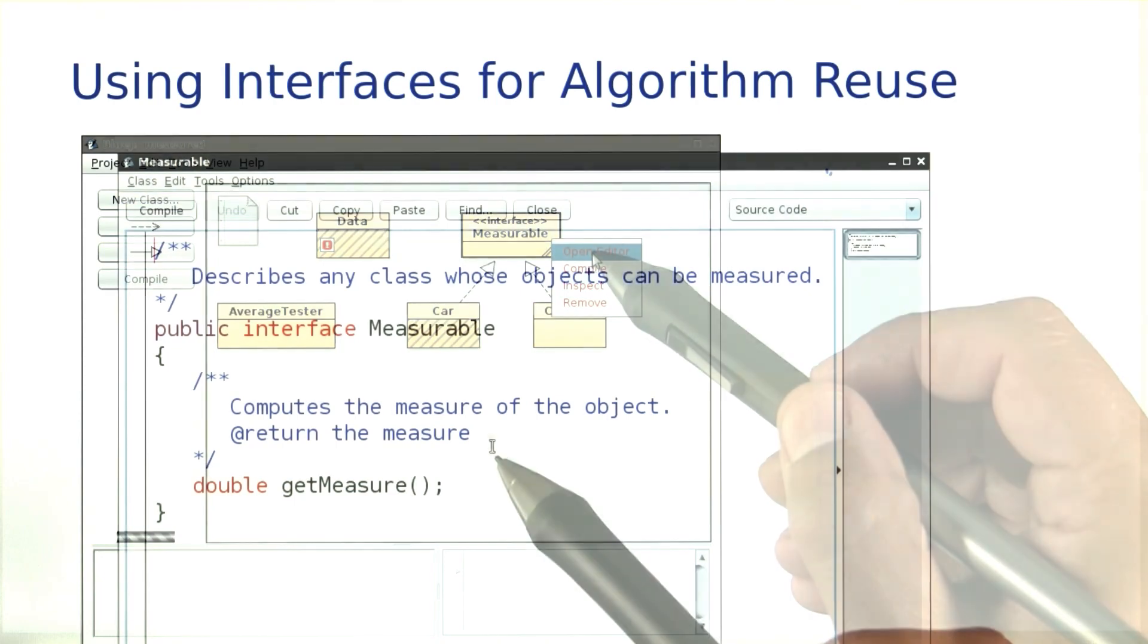Let's look inside. It just has a single method, getMeasure. We expect each class that implements this interface to provide an appropriate implementation for getMeasure.